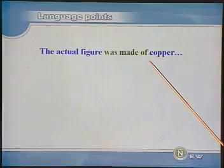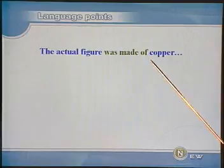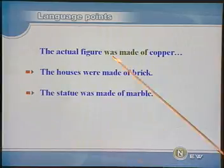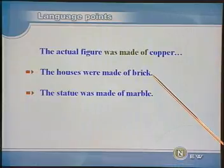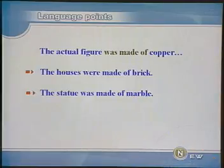下面请看第二个语言点：The actual figure was made of copper. 'Be made of' 的意思是用什么制成。又比如：The houses were made of brick. 这些房屋由砖块制成。The statue was made of marble. 这尊雕像由大理石制成。